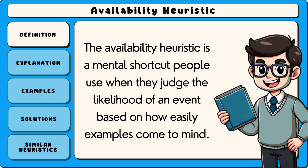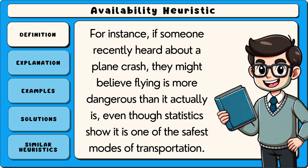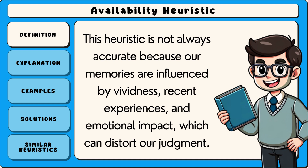The availability heuristic is a mental shortcut people use when they judge the likelihood of an event based on how easily examples come to mind. Instead of considering all possibilities, people tend to rely on immediate memories or examples that stand out. For instance, if someone recently heard about a plane crash, they might believe flying is more dangerous than it actually is, even though statistics show it is one of the safest modes of transportation. This heuristic is not always accurate because our memories are influenced by vividness, recent experiences, and emotional impact, which can distort our judgement.